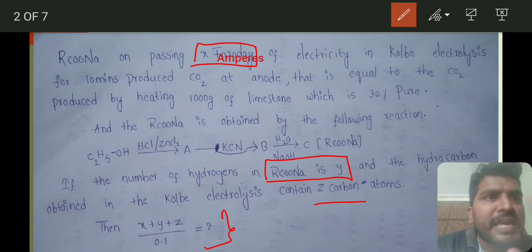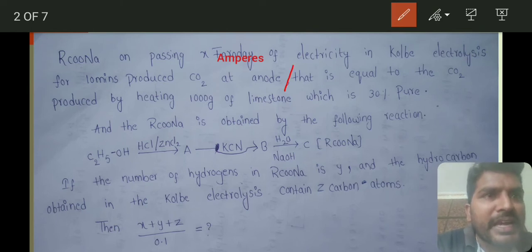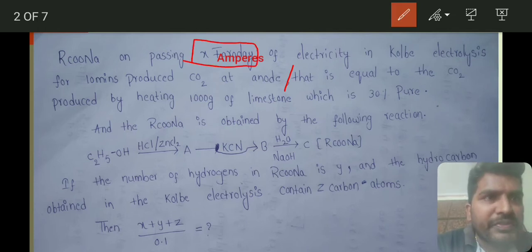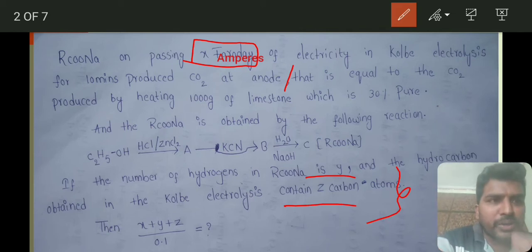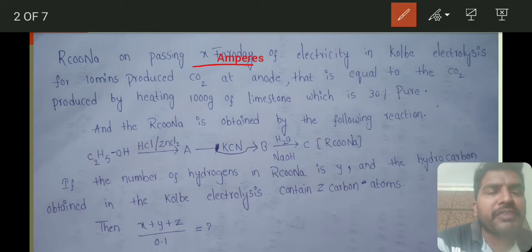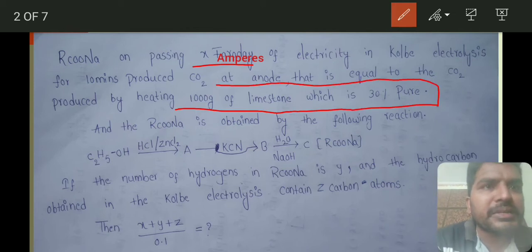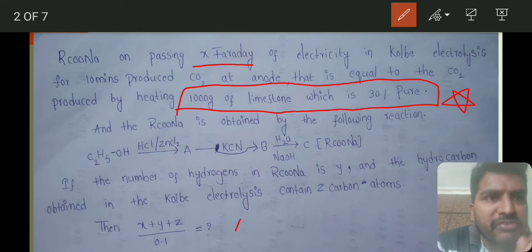First you have to find the X value using Faraday's first law of electrolysis. Y and Z calculations depend upon the mechanism of Kolbe electrolysis. First, find how many Faradays of current is required to produce the carbon dioxide that is obtained by heating 30% pure, 1000 grams of limestone. If we know how much carbon dioxide is obtained, we can find the X value.